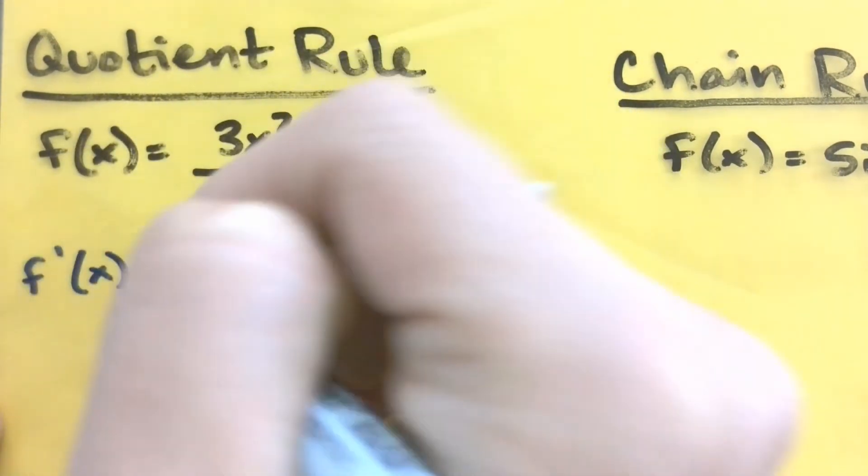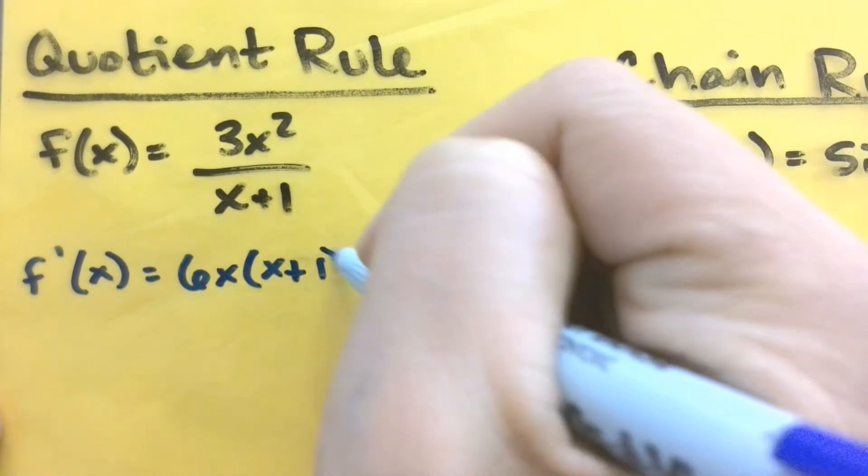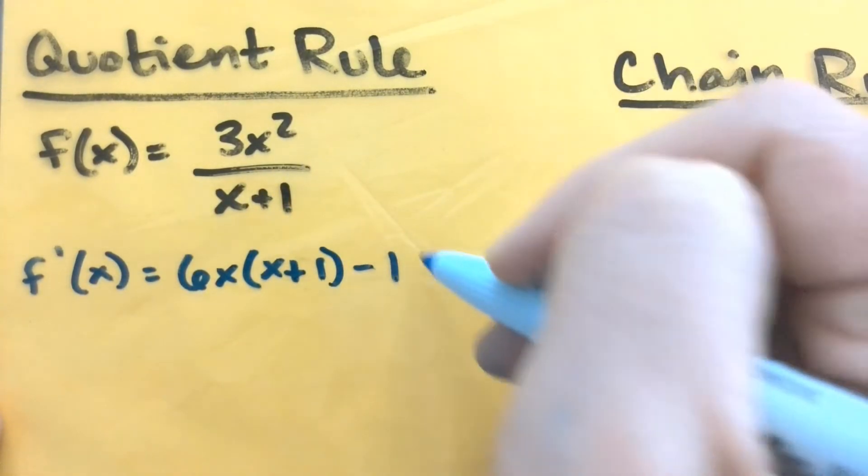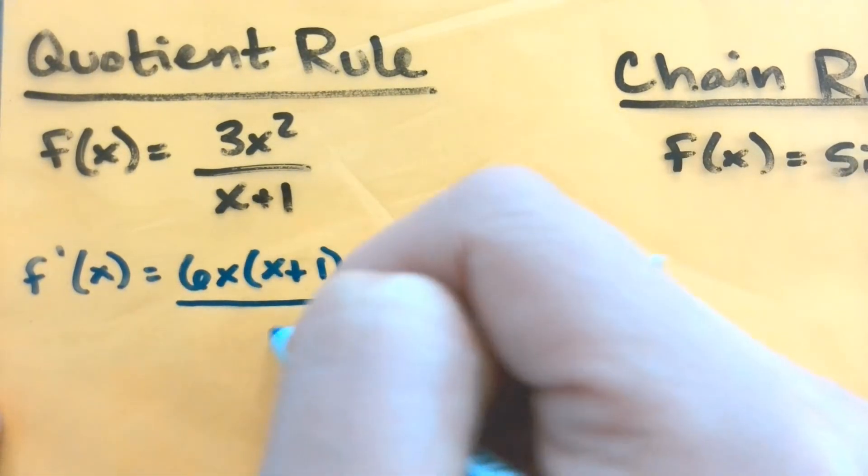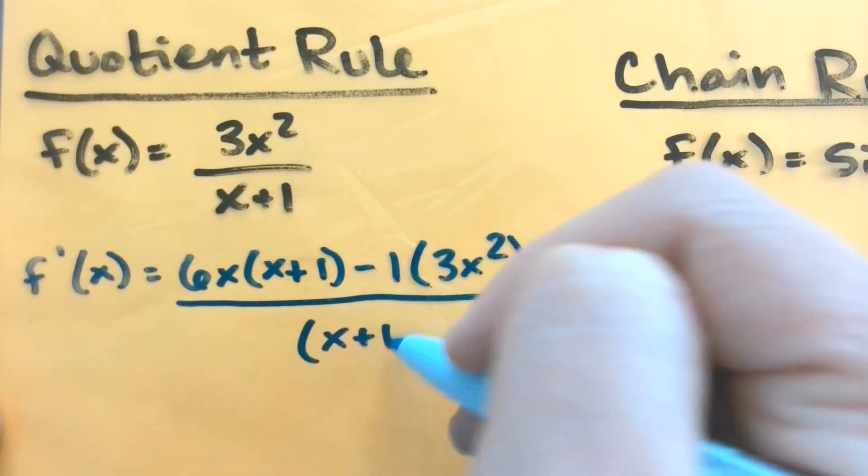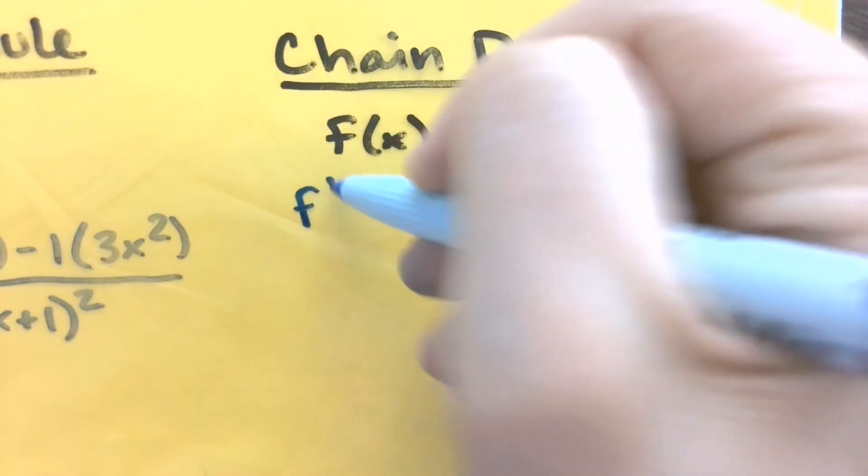For the quotient rule, we're taking the derivative of the top times the bottom minus the derivative of the bottom times the top, all over the denominator squared. And then last but not least, the chain rule.